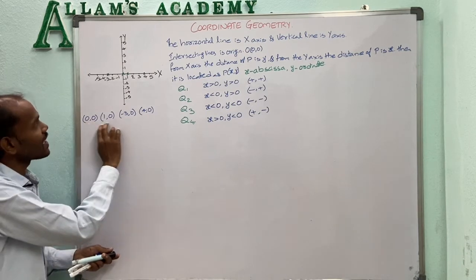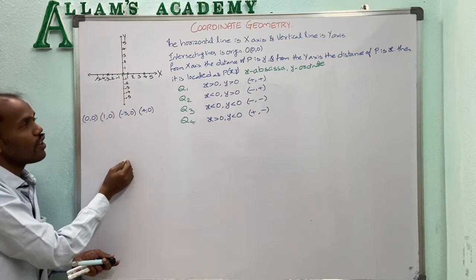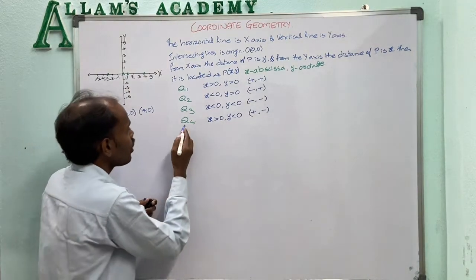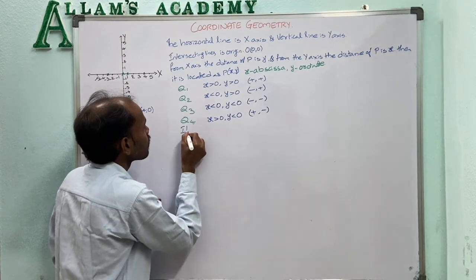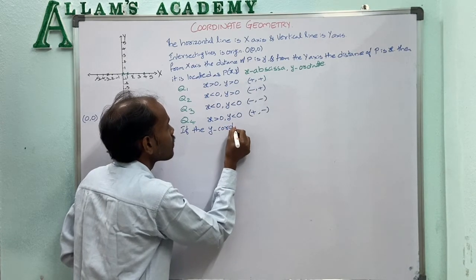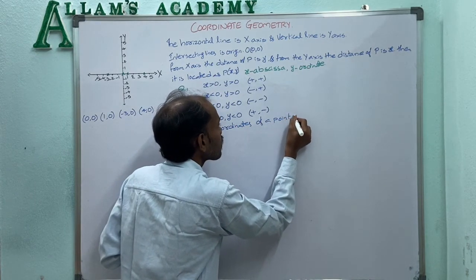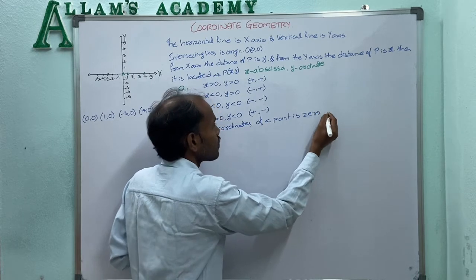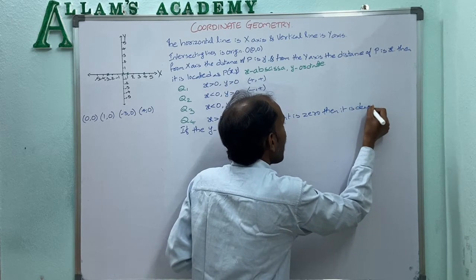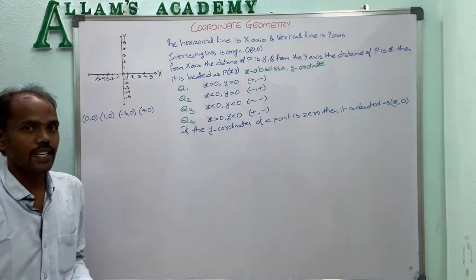Observing all these points, the y-coordinates are 0. So if the y-coordinate of a point is 0, the point lies on the x-axis, and it is denoted as (x, 0).